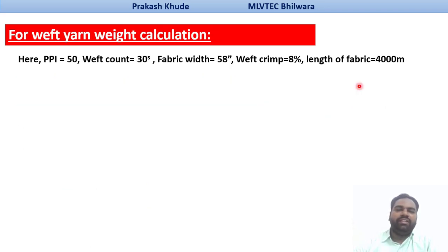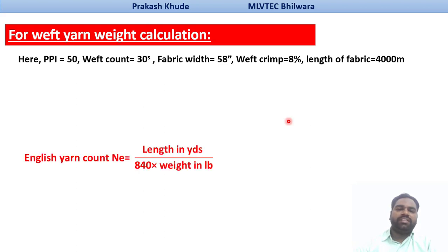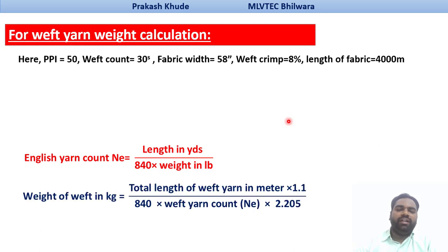Now for calculation of your weft yarn weight, the construction parameters are: PPI is 50, weft count is 30, fabric width is 58 inches, weft crimp is 8 percent, and the length of the fabric is 4000 meters. Similar to the warp weight calculation, we use the English count formula where we need to find the weight of weft yarn in kg. The total length of weft yarn in meters is multiplied by 1.1 to convert to yards, then divided by 840 and the weft yarn count, and multiplied by 2.205.